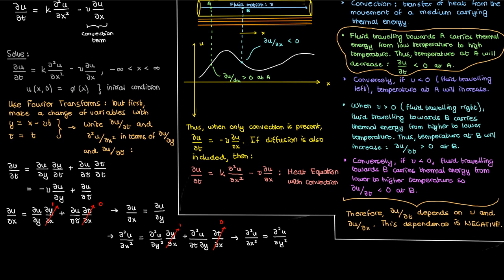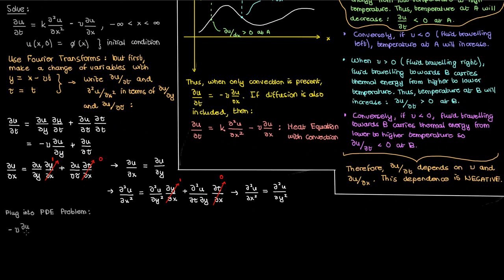If we now plug this into our PDE problem this is what we end up with in terms of the new variables y and tau. The first partials with respect to y cancel on both sides and the initial condition would correspond to a tau of 0 so phi of x would just become phi of y.